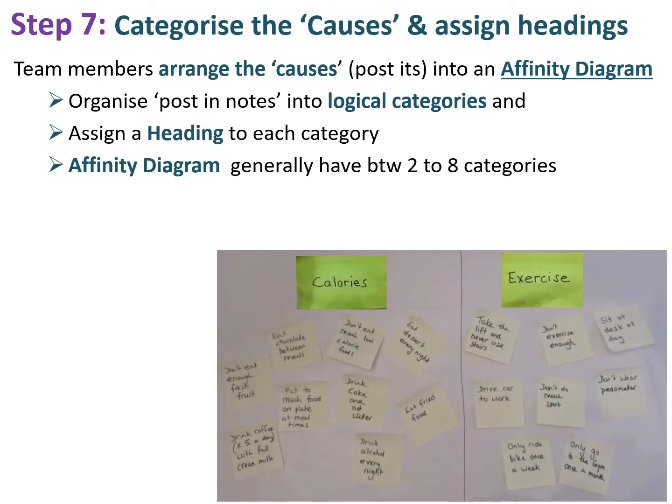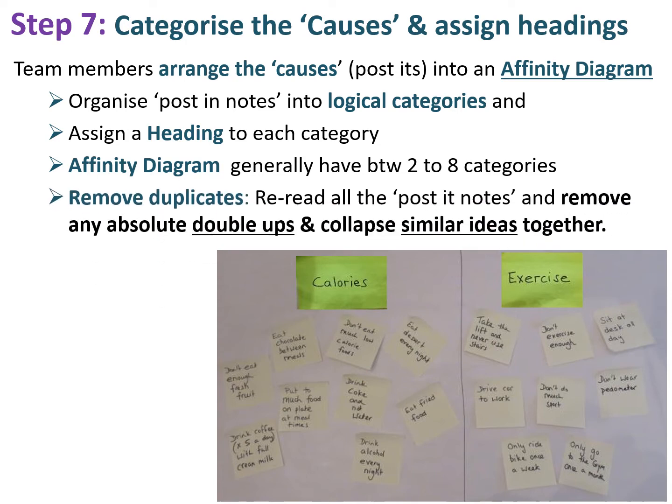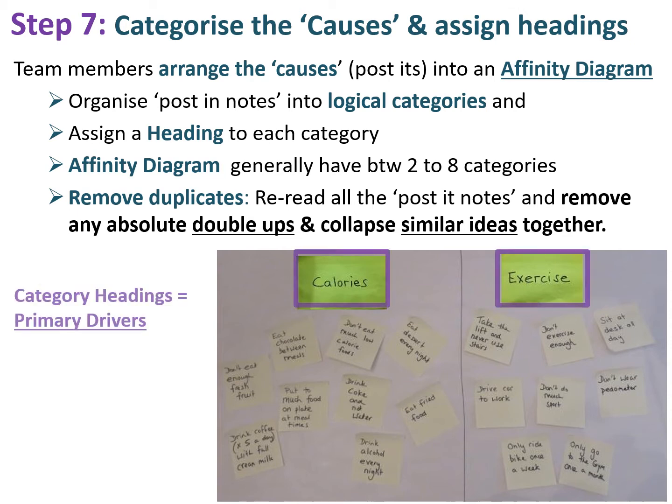With David, we looked at all his post-it notes and found basically two categories: one around calories and one about exercise. At this stage, reread all the post-it notes and remove any exact duplicates. You might also find some items that can be collapsed together — just make sure there's consensus in the team about what you collapse.